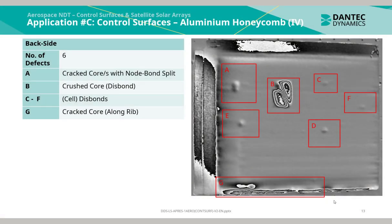On the back side of the panel there were also 6 indications. Indication A was a crack core with no bond split. B was a crushed core which effectively caused a disbond. C, D, E and F were all indications of local cell disbond. And G was a crack core also along the rib. This discontinuity was identifiable on both the back and front side of the panel.